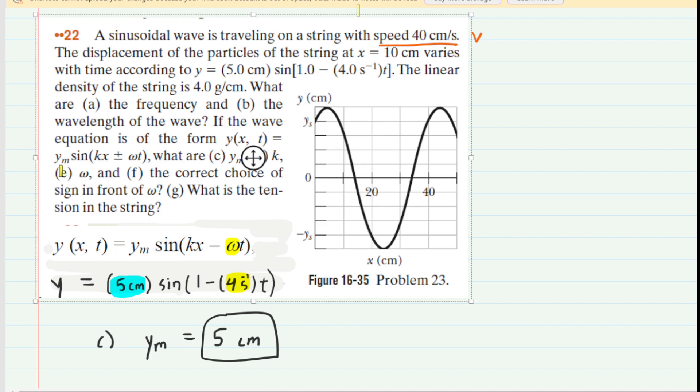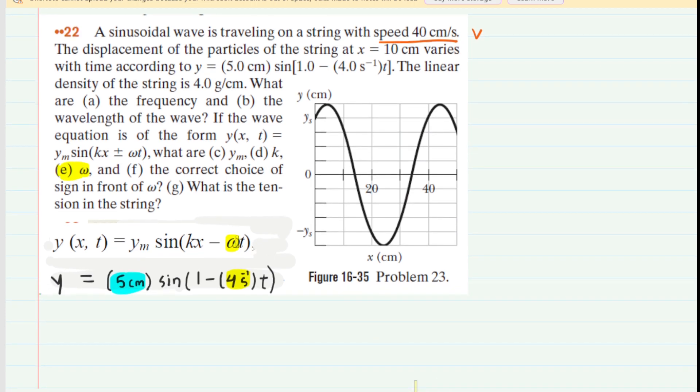Now on to part e, which asks us for the angular frequency omega, but we've already done that. Remember, by inspection, by lining up the equations, we saw that the angular frequency was that 4 radians per second. So very simply, for part e, we could say that omega is equal to 4 radians per second. That would be the correct answer to part e.